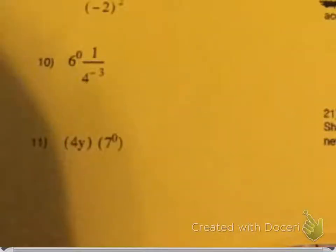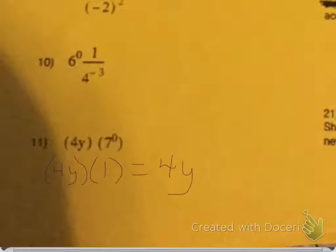For number 11, we're going to start by simplifying. So we have 4y, then 7 to the power of 0 equals 1, we multiply across and we get 4y.